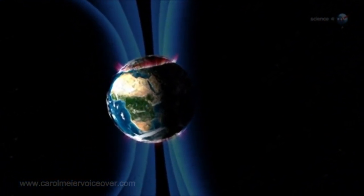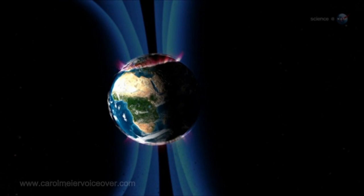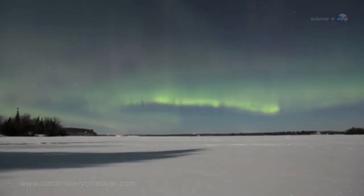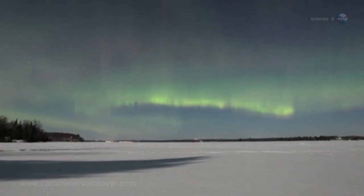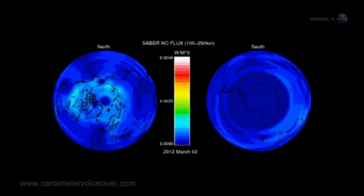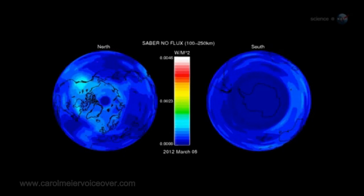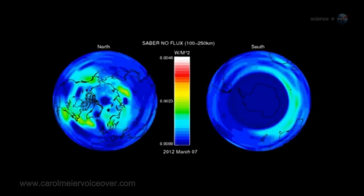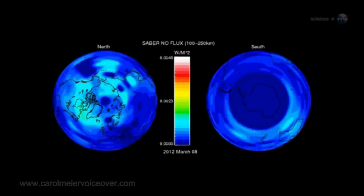The action produced spectacular auroras around the poles and significant upper atmospheric heating all around the globe. The thermosphere lit up like a Christmas tree, says Russell. It began to glow intensely at infrared wavelengths as the thermostat effect kicked in.